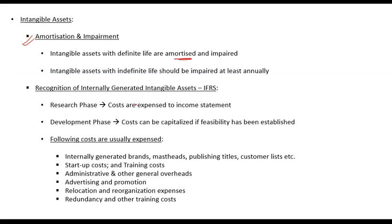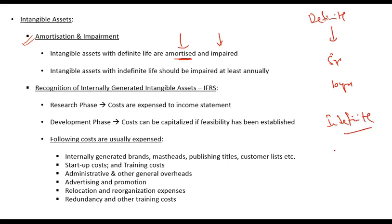You amortize the intangible asset. They can either be amortized or they can be impaired. If there is an intangible asset that has a definite life — for example five years, ten years, or any definite life — that intangible asset can be amortized or impaired. But if there is an intangible asset that has an indefinite life, for which you do not know the life, you cannot amortize that — you can only impair it.